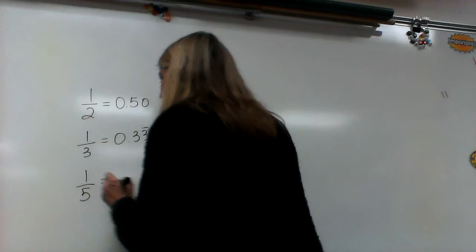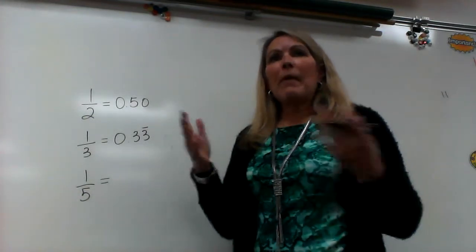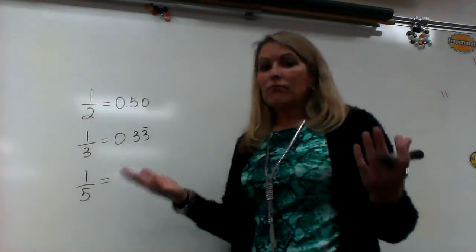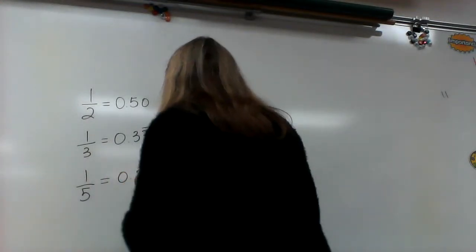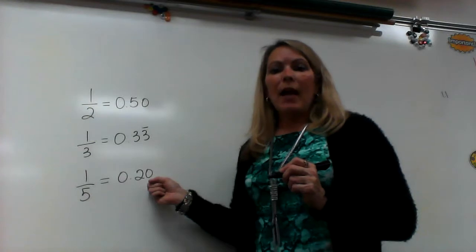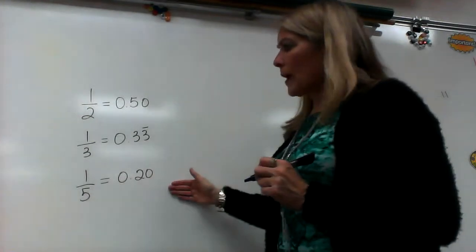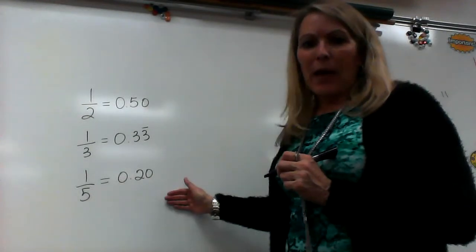A fifth is how many fives are in 100? 20. So, five times 20 is 100. So, that means one fifth would be 20 hundredths. So, if you know these three, then you can figure out any of the rest of them.